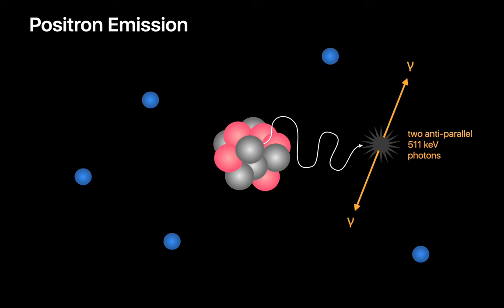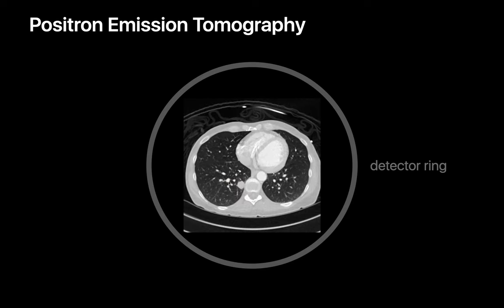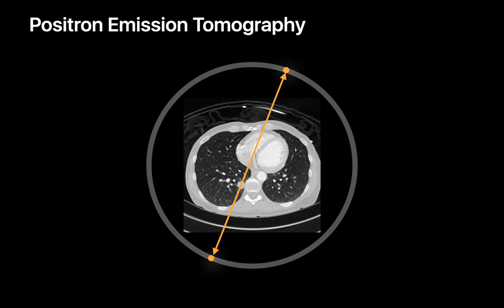In positron emission tomography, or PET imaging, we introduce radiotracers into the body that preferentially accumulate in particular environments of clinical interest. We then acquire a three-dimensional image map of the distribution and concentration of the radiotracer within the body. We create this image by surrounding the patient with a ring of gamma-ray detectors. Whenever two detectors on opposite sides of the ring detect gamma photons at the same time, we know that a positron-electron annihilation event has occurred somewhere along a line between these two spots.